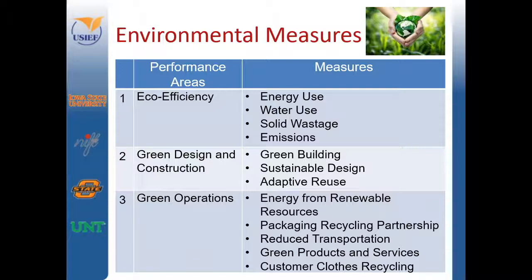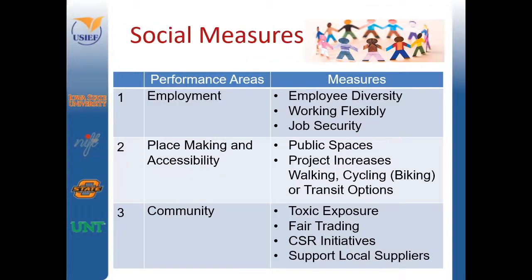The final construct of the triple bottom line scoring framework would be social measures. Key areas of performance within the social measures may include employment, placemaking and accessibility, and community. Measures for employment may include employee diversity, working flexibility, and job security. Measures of community may include toxic exposure, fair trade, CSR initiatives, and support of local suppliers. Additional performance areas and measures may also exist.